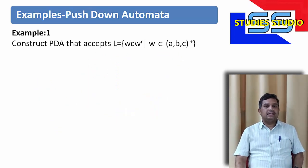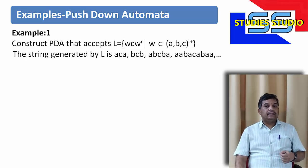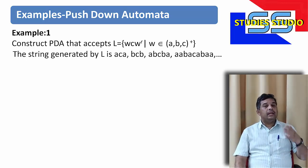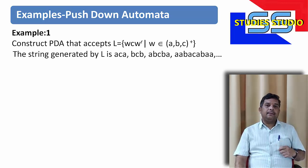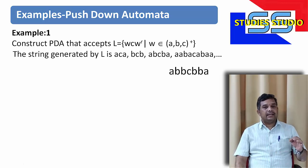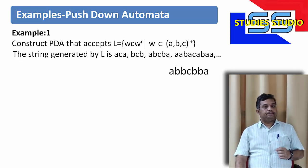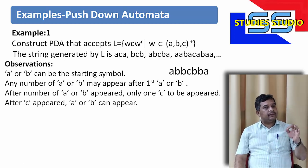Today's first example is: construct a PDA that accepts the language of the form wcw^r. It means it is the reversal of the string W on {a,b}+. The strings accepted by this language will be in the form a c a, or b c b, or a b c b a, and so on. After the first string there is a c, and then the string's reversal follows. For example: a b b, then c, then b b a — b b a is the reversal of a b b.